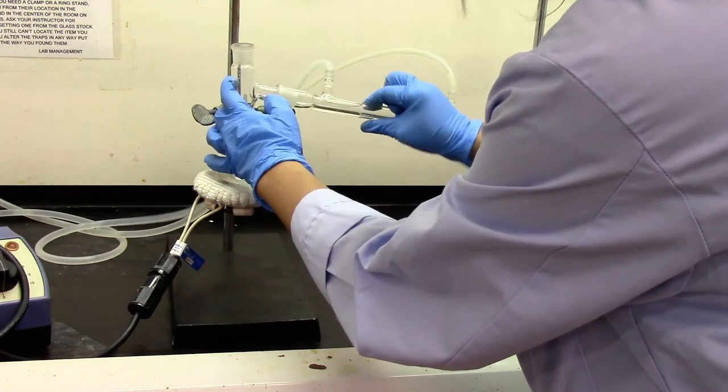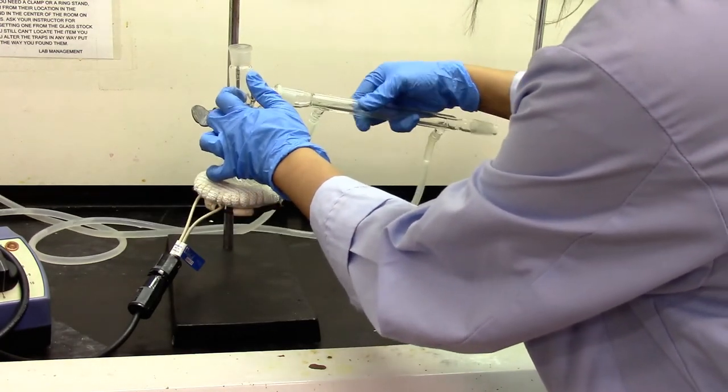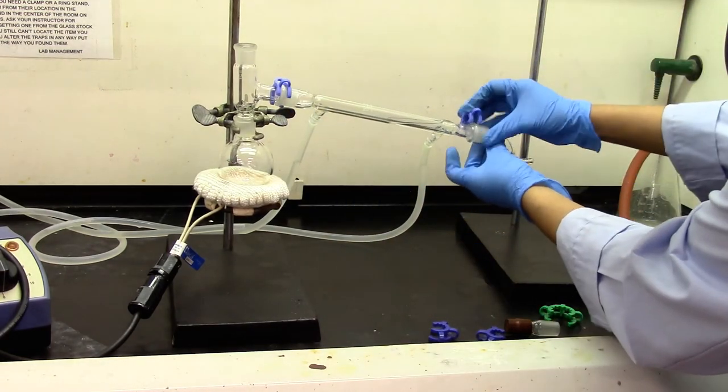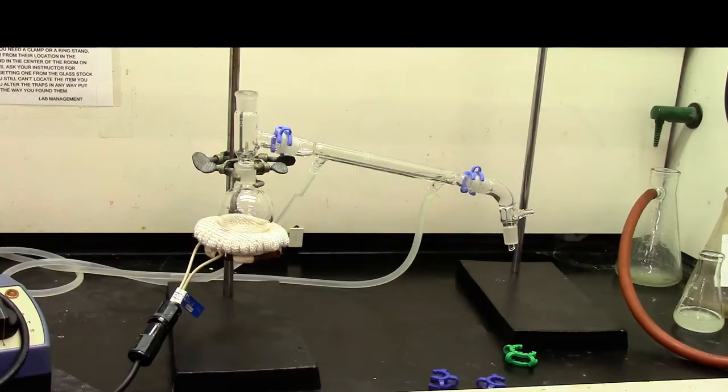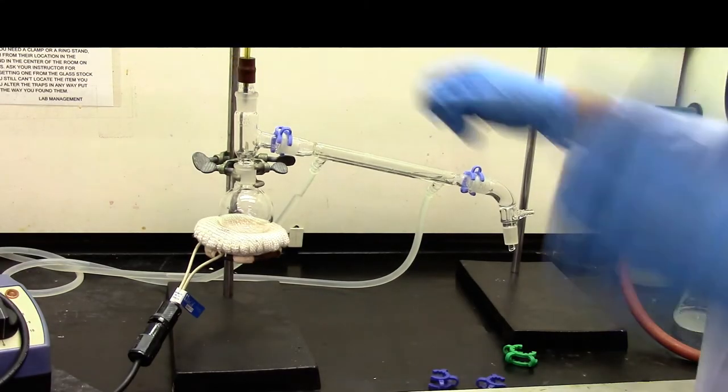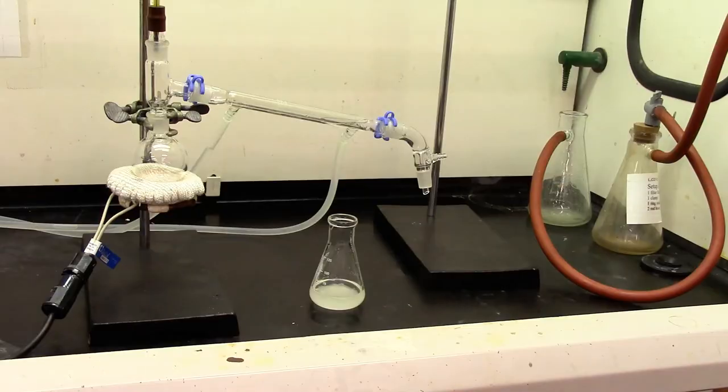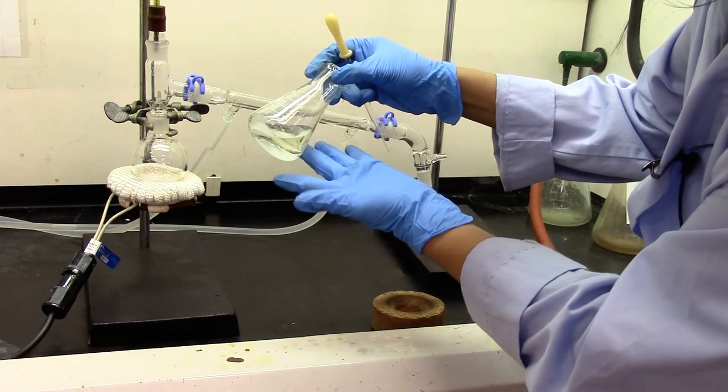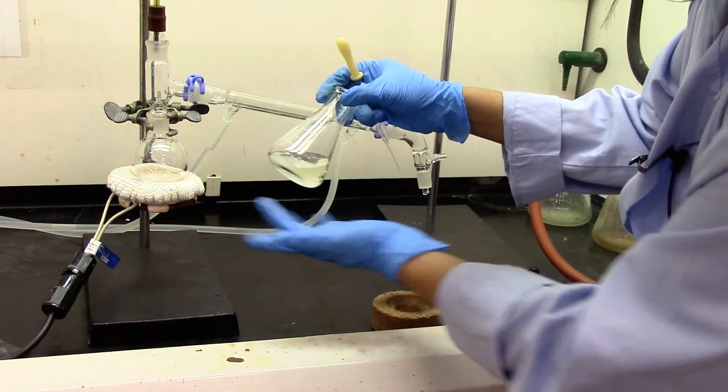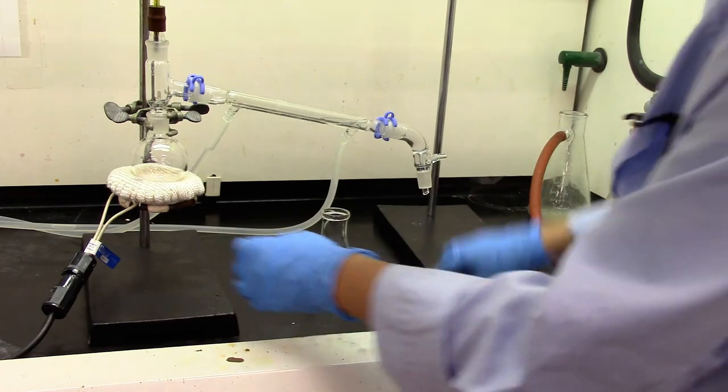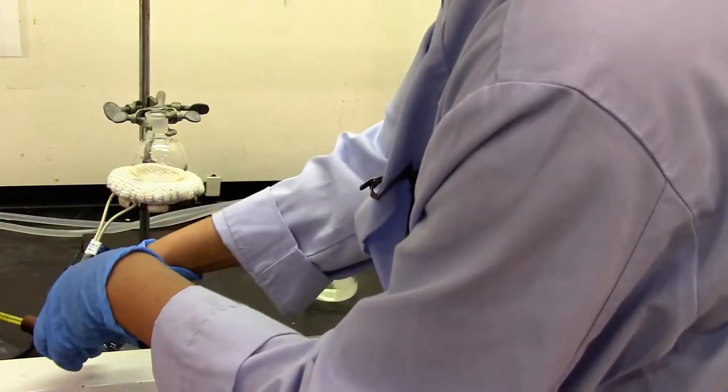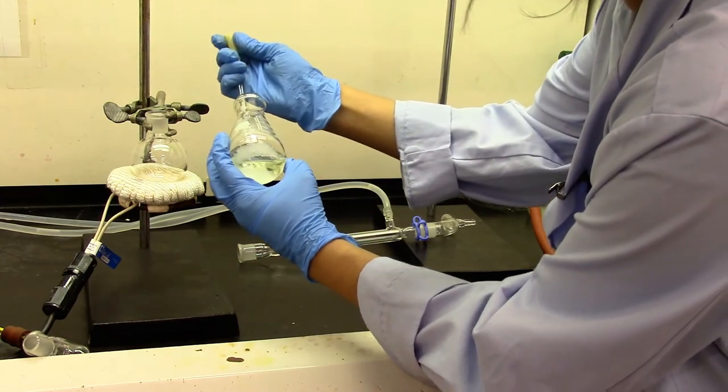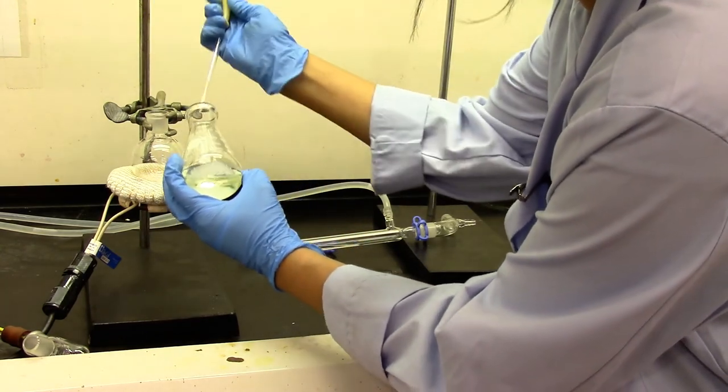I'm going to quickly set up a simple distillation. I'm going to quickly transfer my dichloromethane layer from here to the round bottom flask. So tilt the Erlenmeyer flask. Transfer just the liquid onto the round bottom flask.